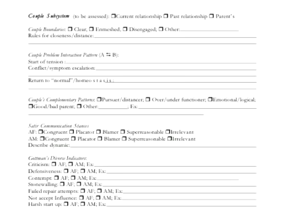In this next section we really get into the systemic assessment part. We're going to start by assessing the couple subsystem. You can assess either the current relationship, a past relationship, or their parents' relationship. If they're an adult with intimate relationships, you would assess the current or most recent significant past relationship. If they're kids or haven't had significant relationships, you can assess the parents' relationship — and when working with kids it's very important to assess the couple's functioning because it often affects the child's emotional and mental well-being. We're going to look at the couple's boundaries, interaction pattern, complementary behaviors, communication stances, and finally indicators of divorce.